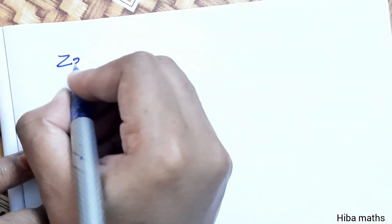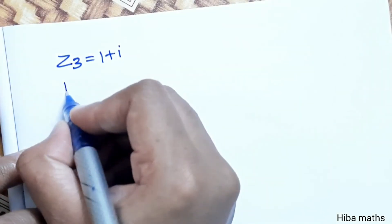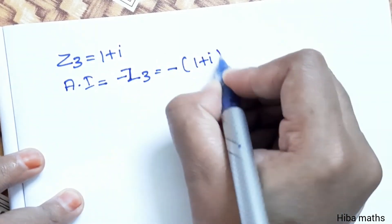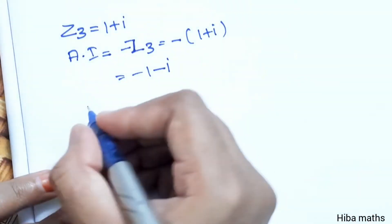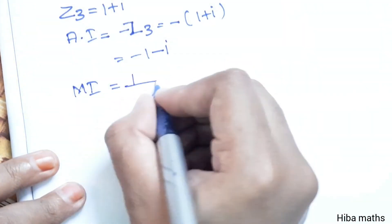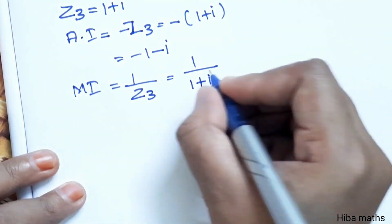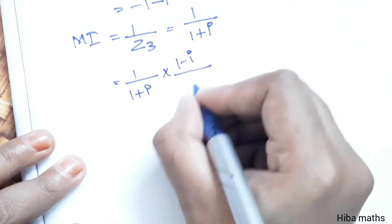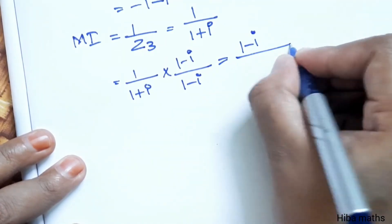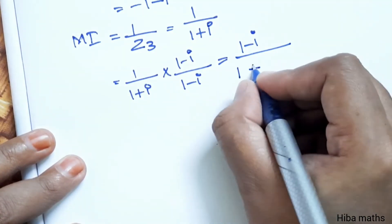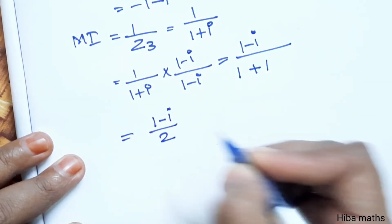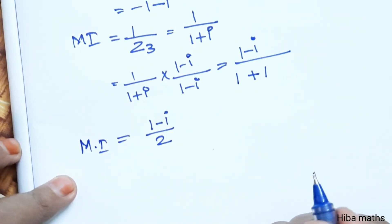For z3 equals 1 plus i: additive inverse is minus z3 equals minus 1 minus i. Multiplicative inverse is 1 by 1 plus i. Multiply by conjugate 1 minus i over 1 minus i. Denominator is 1-squared plus 1-squared equals 2. So multiplicative inverse is 1 minus i divided by 2. Thank you so much for watching.